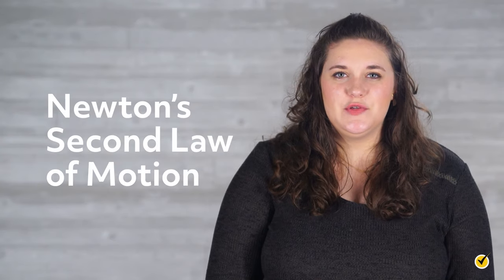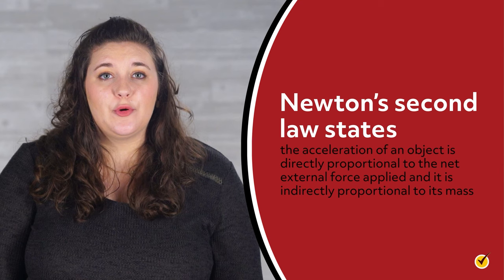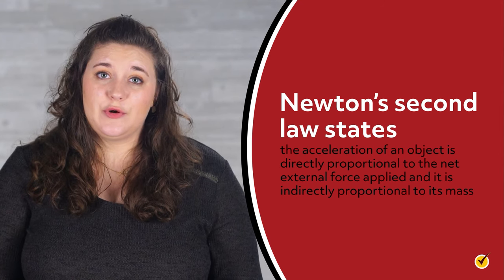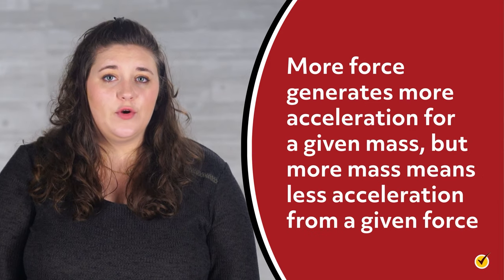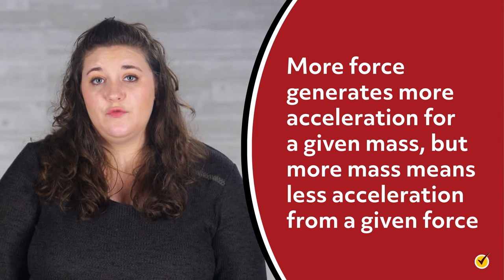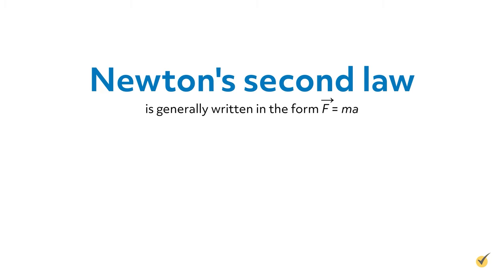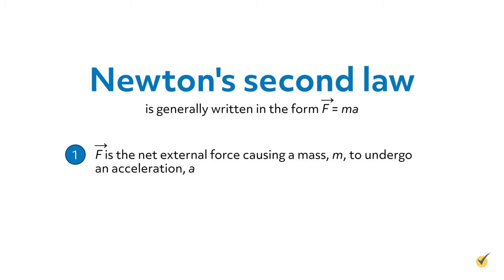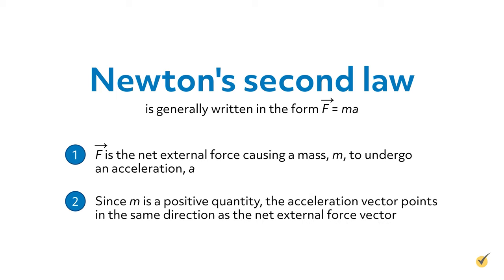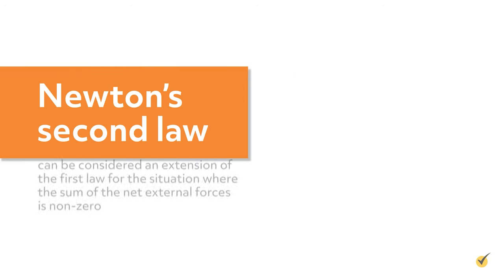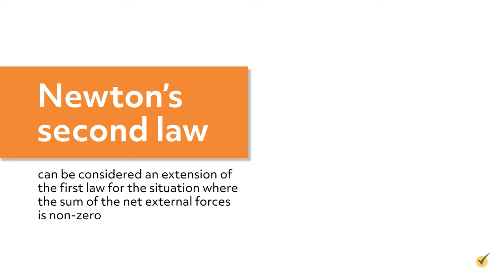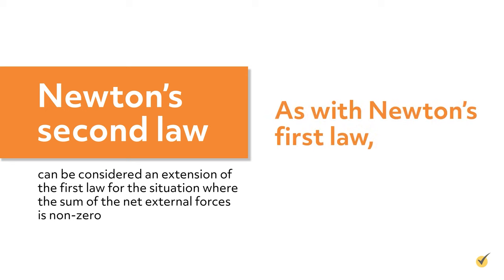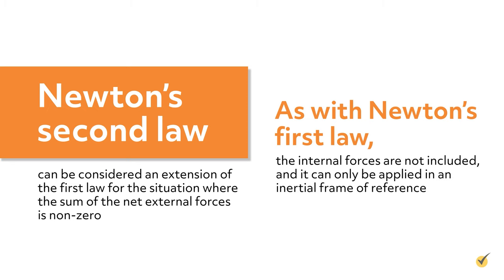Hi and welcome to this video on Newton's second law of motion. We will look at Newton's second law, compare it with his first law, and look at a couple of simple common applications. Newton's second law states the acceleration of an object is directly proportional to the net external force applied, and indirectly proportional to its mass. In other words, more force generates more acceleration for a given mass, but more mass means less acceleration from a given force. Newton's second law is generally written as F equals MA, where F is the net external force causing a mass M to undergo an acceleration A. Since M is a positive quantity, the acceleration vector points in the same direction as the net external force vector. Newton's second law can be considered an extension of the first law for the situation where the sum of net external forces is non-zero, and it can only be applied in an inertial frame of reference.